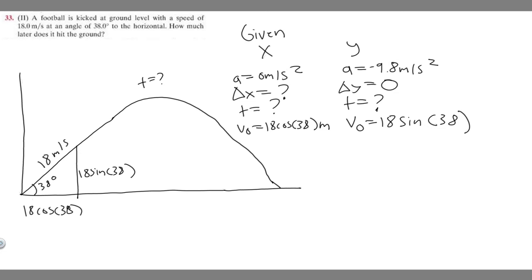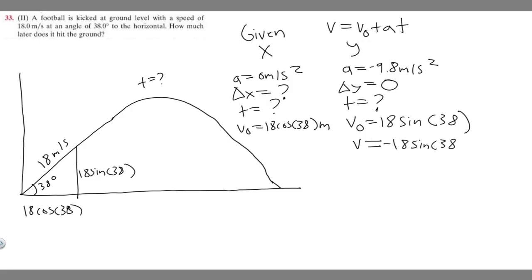To solve this problem, we're going to use the formula v equals v-sub-0 plus a times t. The trick here — the key takeaway — is that the final velocity is just the opposite of your initial vertical velocity. So if the initial y velocity is 18 sine of 38 upward, the final y velocity is minus 18 sine of 38. That's the trick to solving this problem.